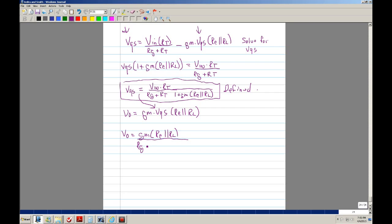So we get Gm RE parallel with RL times VN RT over RG plus RT divided by 1 plus Gm RE parallel with RL. And I believe that should be close to the equation. Of course, VN is here, so we'll just move it back here and erase it from here. And we should have our voltage gain.